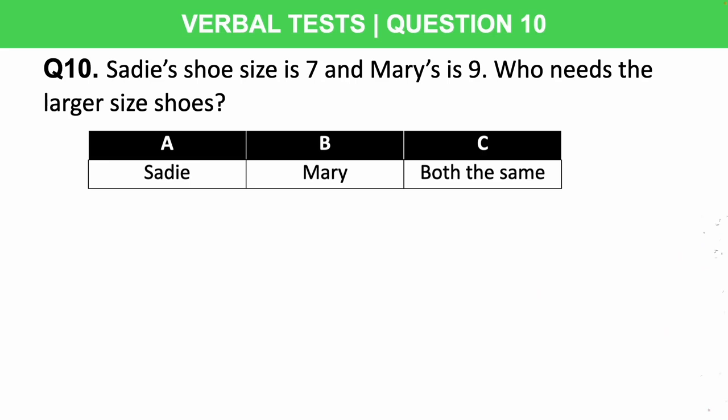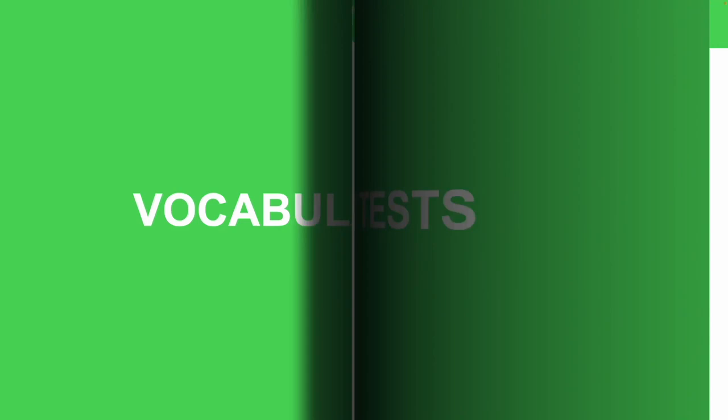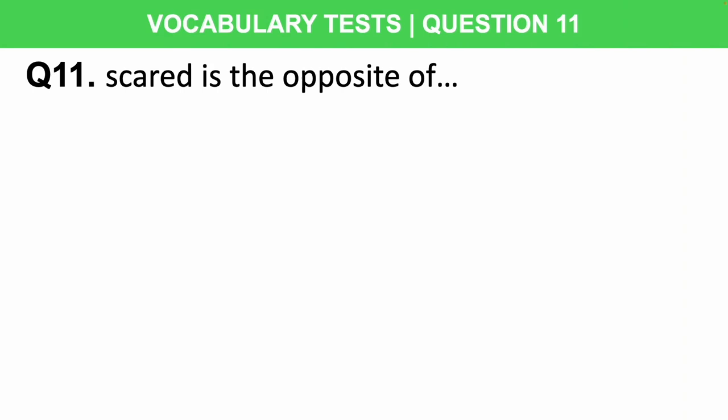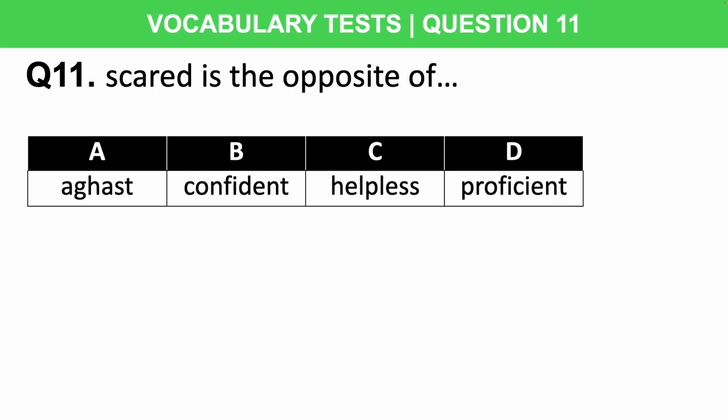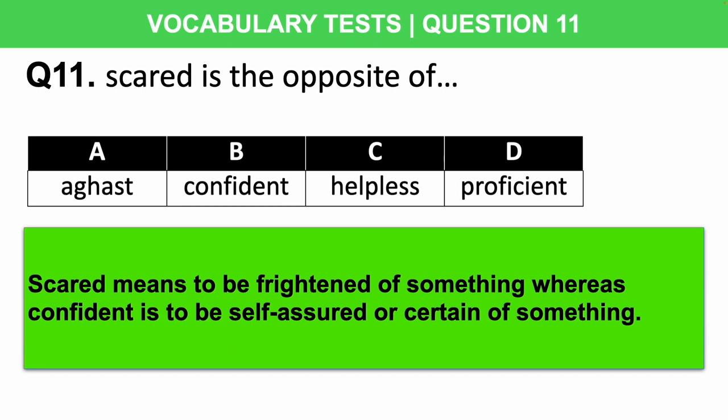Let's now move on to the McCaig Vocabulary Assessment Tests. During the vocabulary part of the McCaig Assessment you'll have to answer 18 questions testing your speed of thought in relation to English comprehension. These questions mainly focus on antonyms — opposites — and synonyms — words that are similar. Question 11: Scared is the opposite of aghast, confident, helpless, or proficient? Scared means frightened, whereas confident means self-assured, so the correct answer is B: confident.